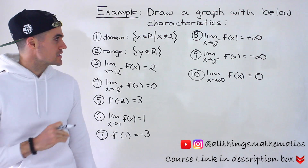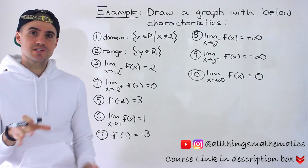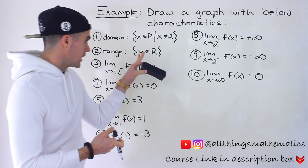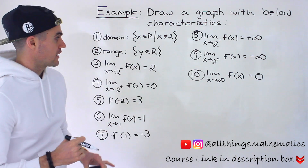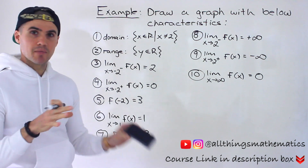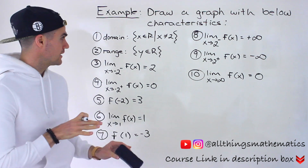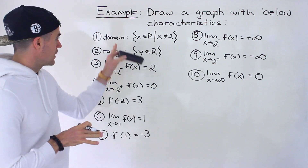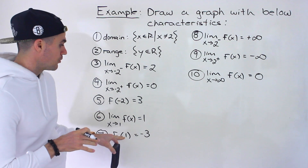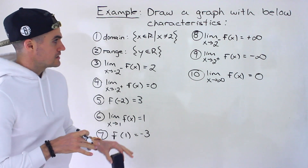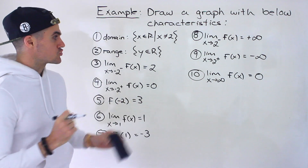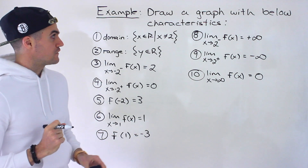Moving on to another question dealing with limits. This is another example where we're going to have to draw a graph given a bunch of characteristics. There are 10 characteristics — a mix of different kinds including domain, range, a bunch of limits, and some points. We're going to have to combine all of these and draw a function.